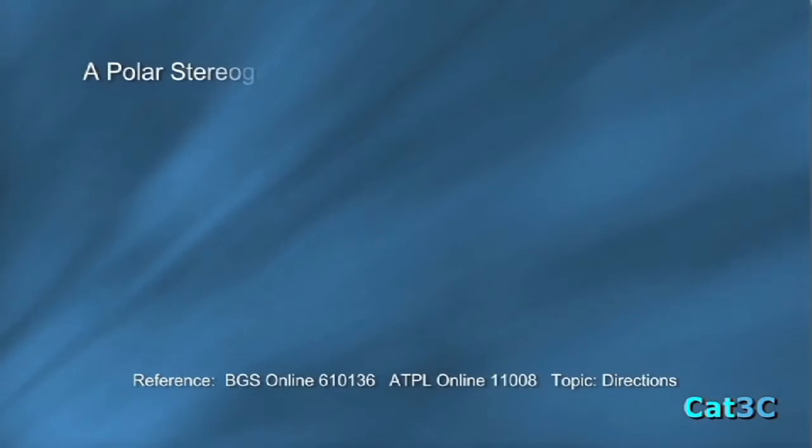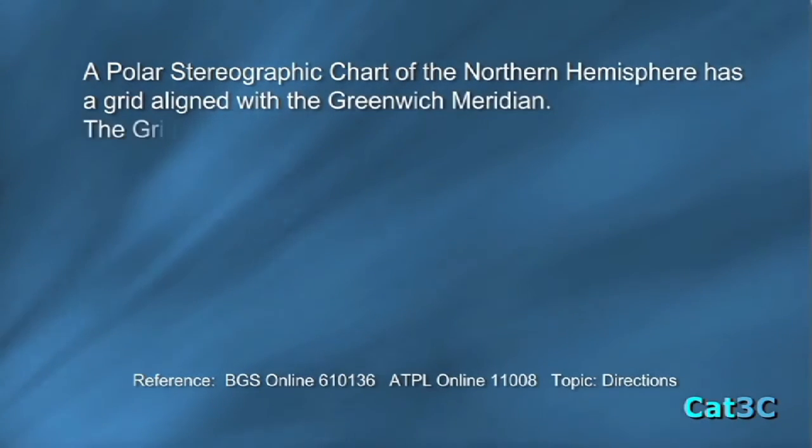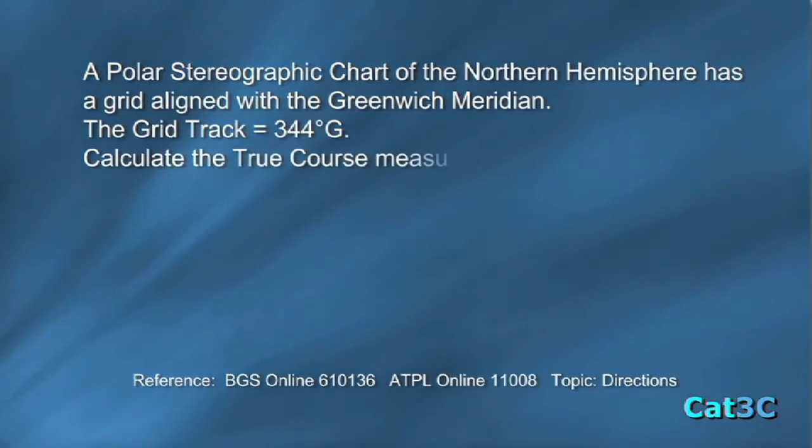A polar stereographic chart of the Northern Hemisphere has a grid aligned with the Greenwich Meridian. The grid track equals 344 degrees grid. Calculate the true course measured at west 115 degrees zero minutes.